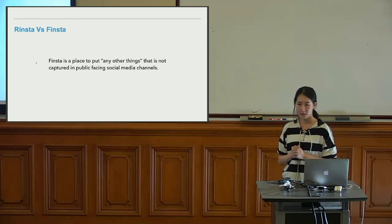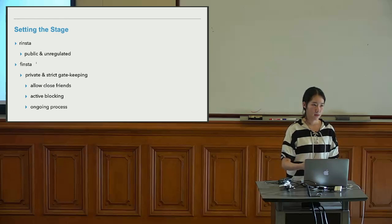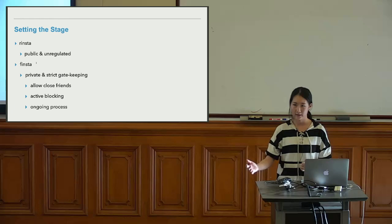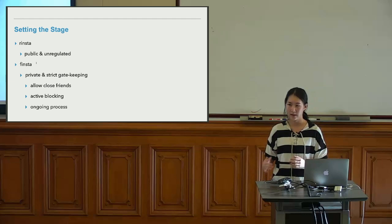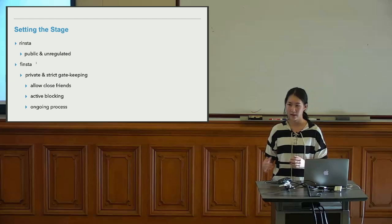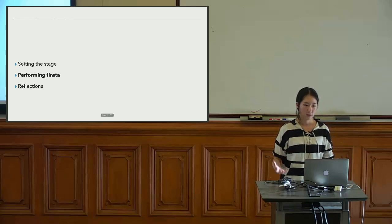The most important step for setting the stage is crafting the audience. On Ringsta, the account is always public with an unregulated audience. On Finsta, the account is usually private with a strict gatekeeping process — they only allow close friends in and actively block people they don't want to find their account. Selecting the audience is an ongoing process: Finsta users constantly review their followers, and if a relationship is no longer close, they remove those people from their Finsta account.